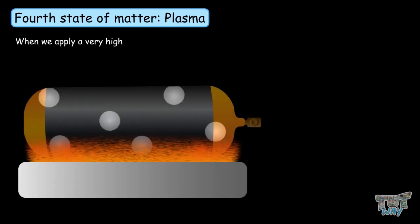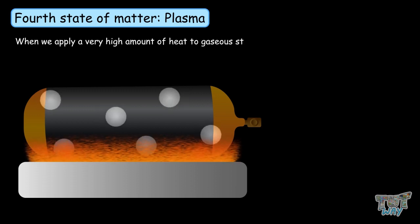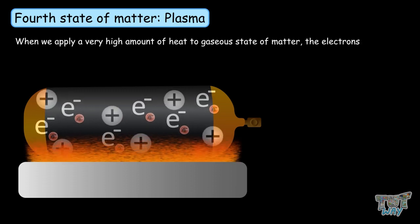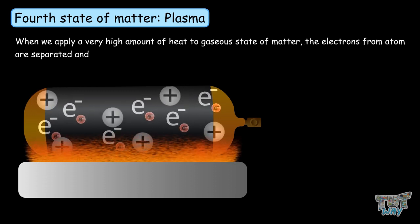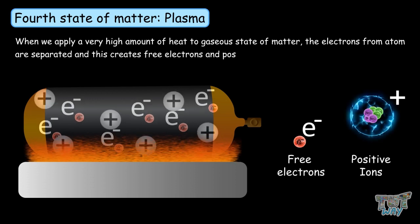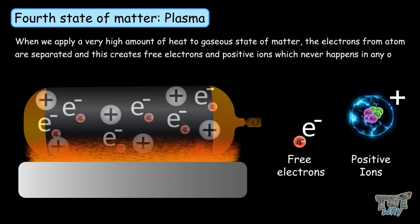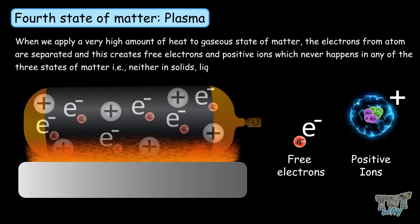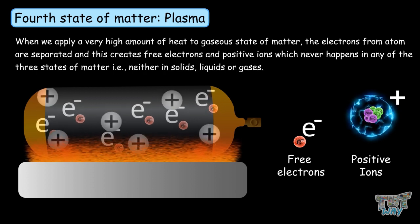But when we apply a very high amount of heat to the gaseous state of matter, the electrons from the atoms are separated, and this creates free electrons and positive ions, which never happens in any of the other three states of matter - neither in solids, liquids, or gases.